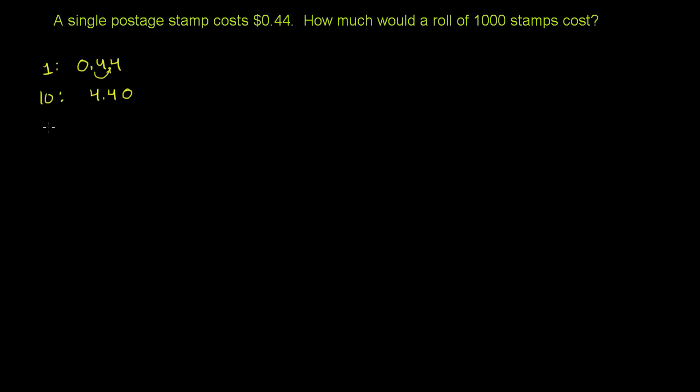Now, what happens if you want to have 100 stamps? Well, the same idea is going to happen. We're now taking 10 times more, so we're going to move the decimal to the right once. So 100 stamps are going to cost $44. And this should make sense for you. If one stamp is 44 hundredths of a dollar, then 100 stamps are going to be 44 hundredths of $100, or $44.